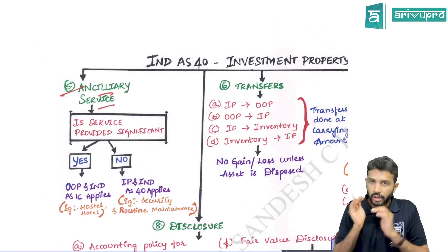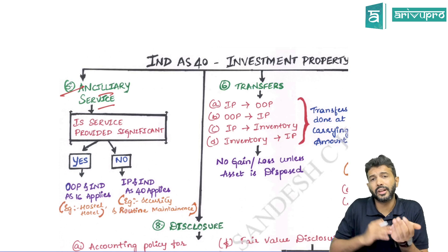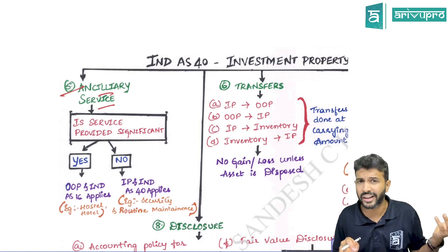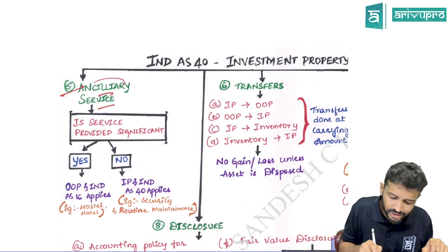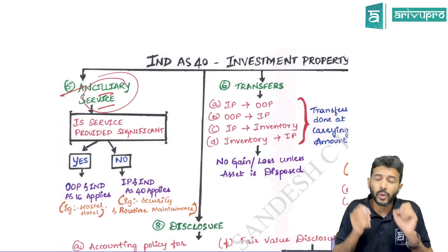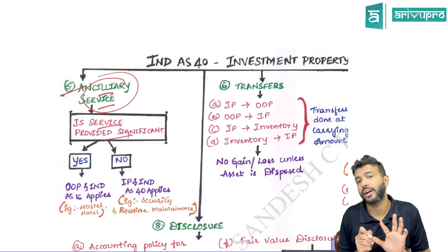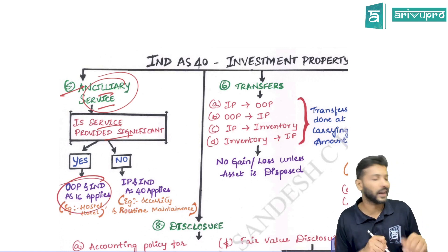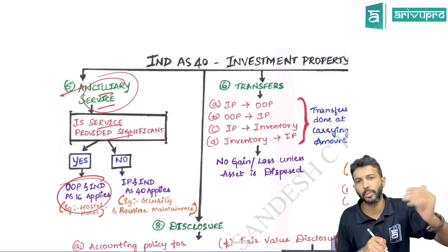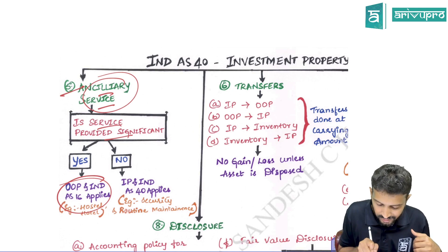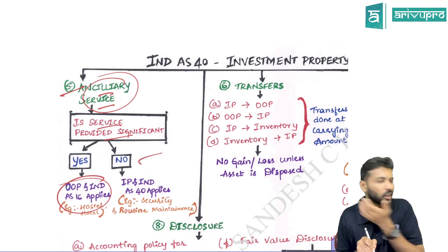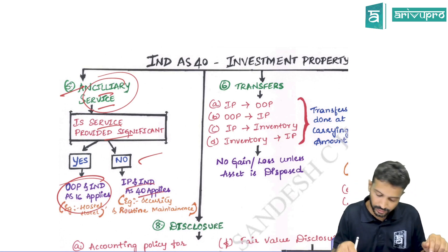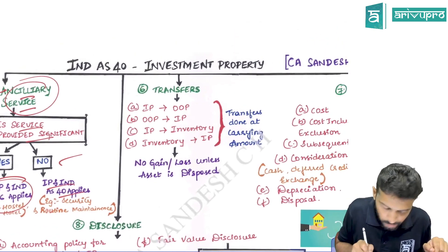If you are giving any ancillary service — it is quite natural that when you let out a property you may provide extra services like repairs, maintenance, security, etc. Check whether the service provided is significant or not. If the service provided is significant, the entire property will be classified as owner-occupied and Ind AS 16 will apply — examples could be a hostel or hotel. If the service provided is not significant, like routine security or maintenance, the property will be classified as investment property and Ind AS 40 will get triggered.